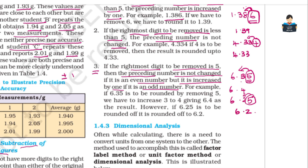If the rightmost digit to be removed is 5, the preceding number is not changed if it is an even number, but it is increased by 1 if it is an odd number. So if you have an odd preceding digit like 3, we add 1 to make it 4.